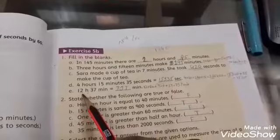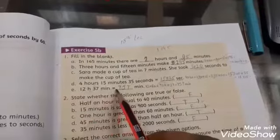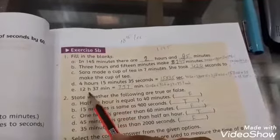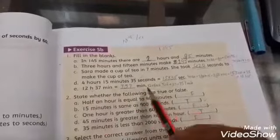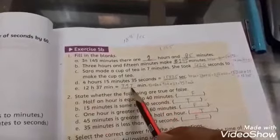12 hours 37 minutes into minutes. First convert 12 hours to minutes, then add 37. The answer is 720 plus 37 equals 757 minutes.